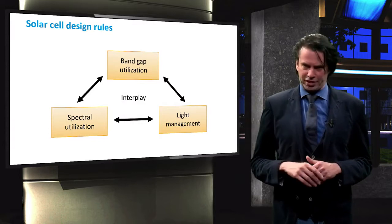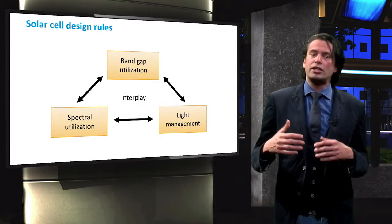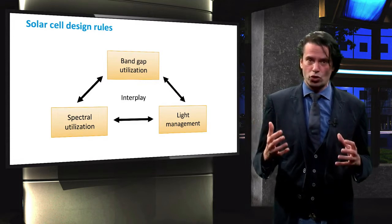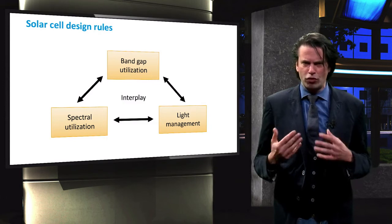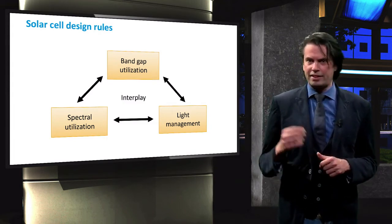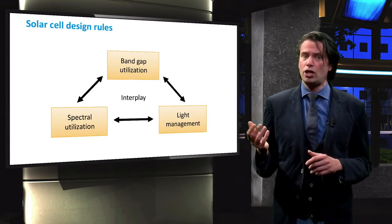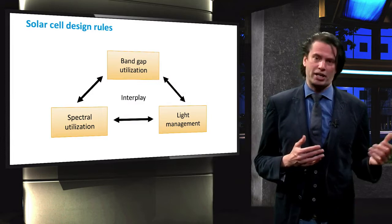These are shown in the figure. Spectral utilization aims at using as large a fraction of the incident solar spectrum as possible. Band gap utilization involves the collection of the generated charge carriers. It therefore considers the electrical losses in solar cells which determine the voltage generated in reference to the band gap.